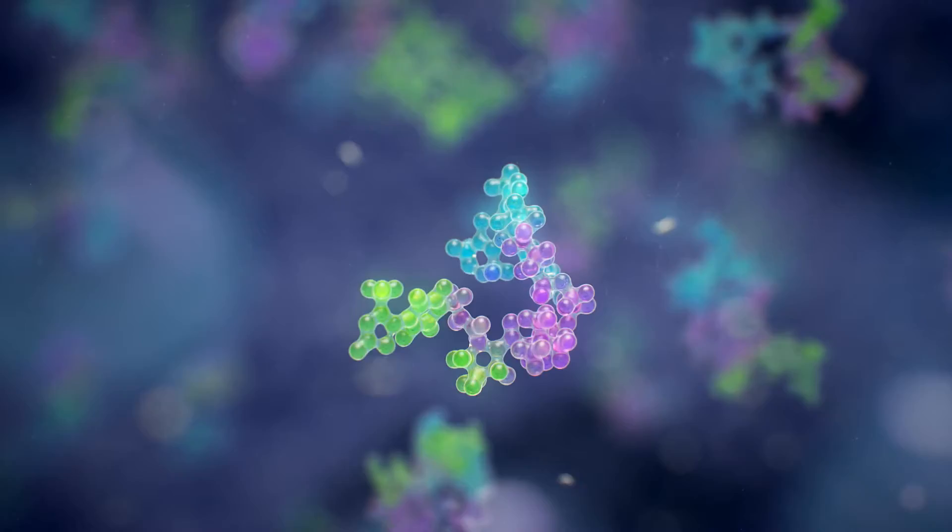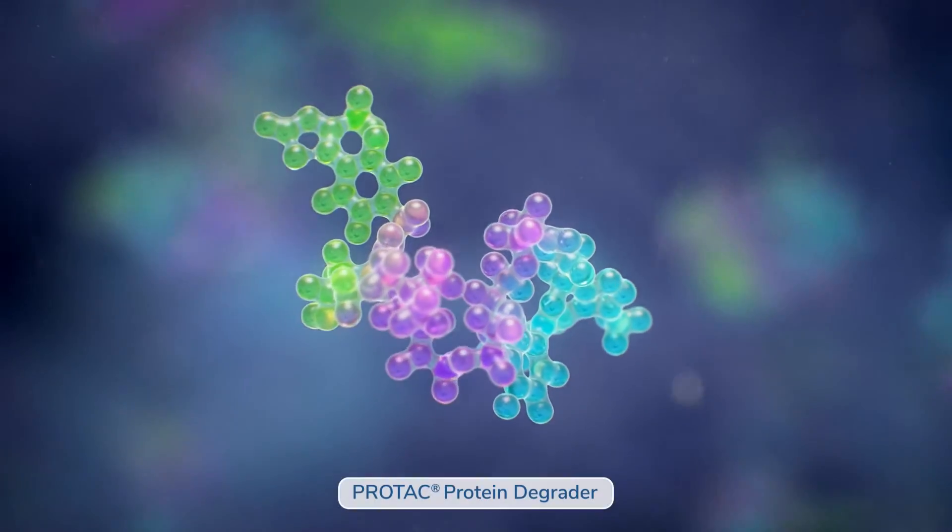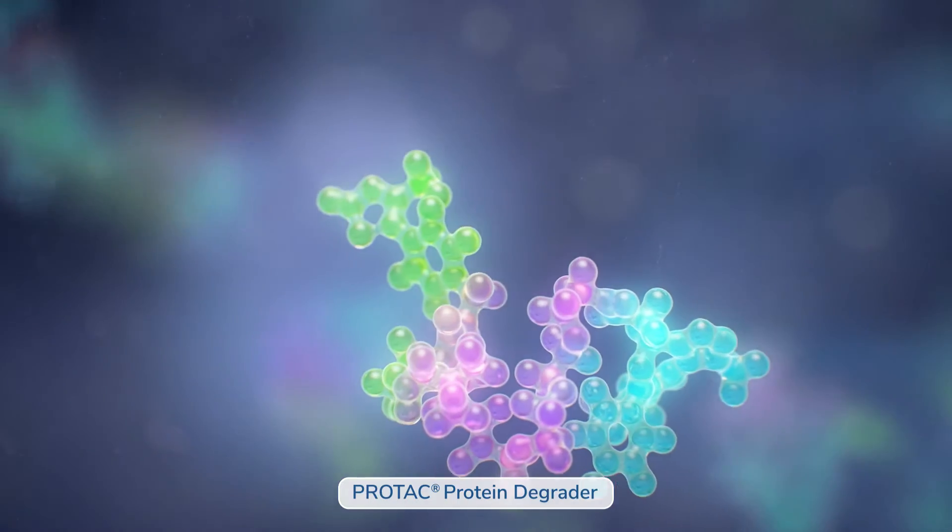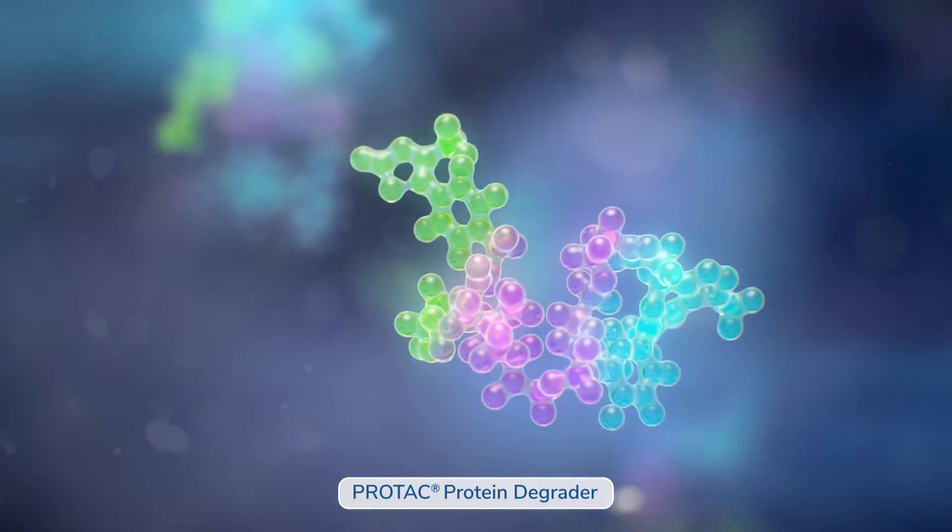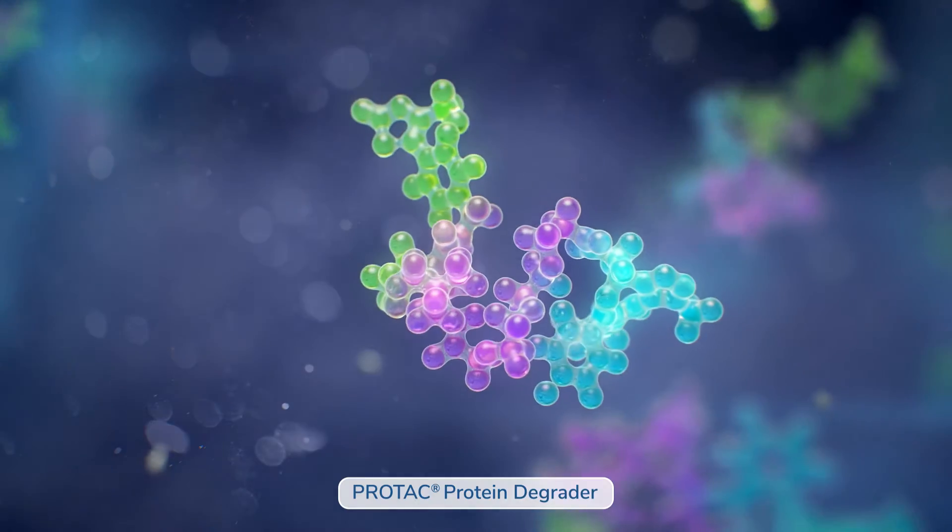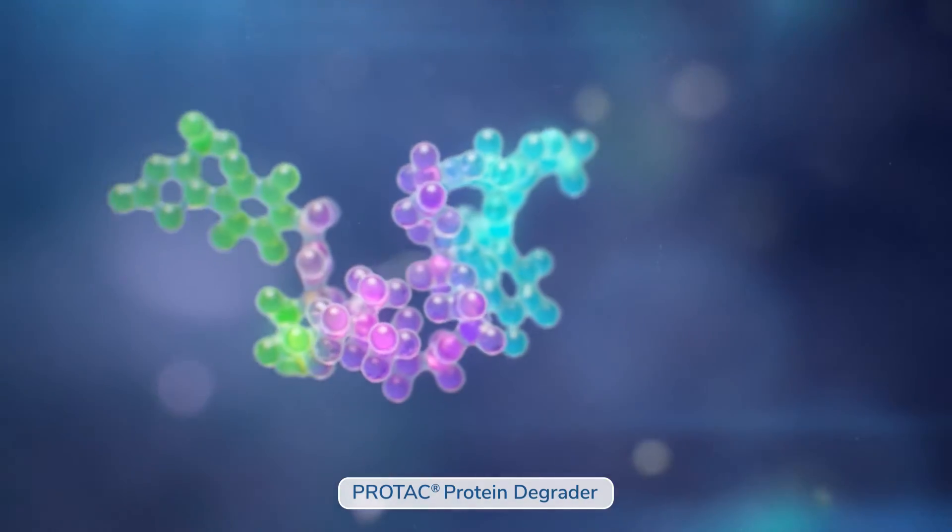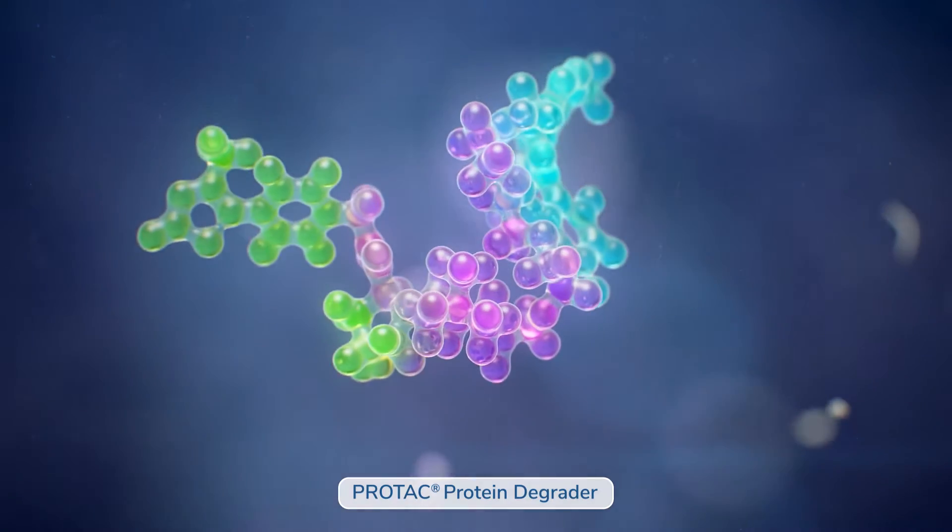Here at Arvinus, we have developed PROTAC protein degraders, or proteolysis targeting chimeras, which are novel molecules that direct the ubiquitin proteasome system to specifically destroy disease-causing proteins, such as those causing cancer or neurodegenerative diseases.